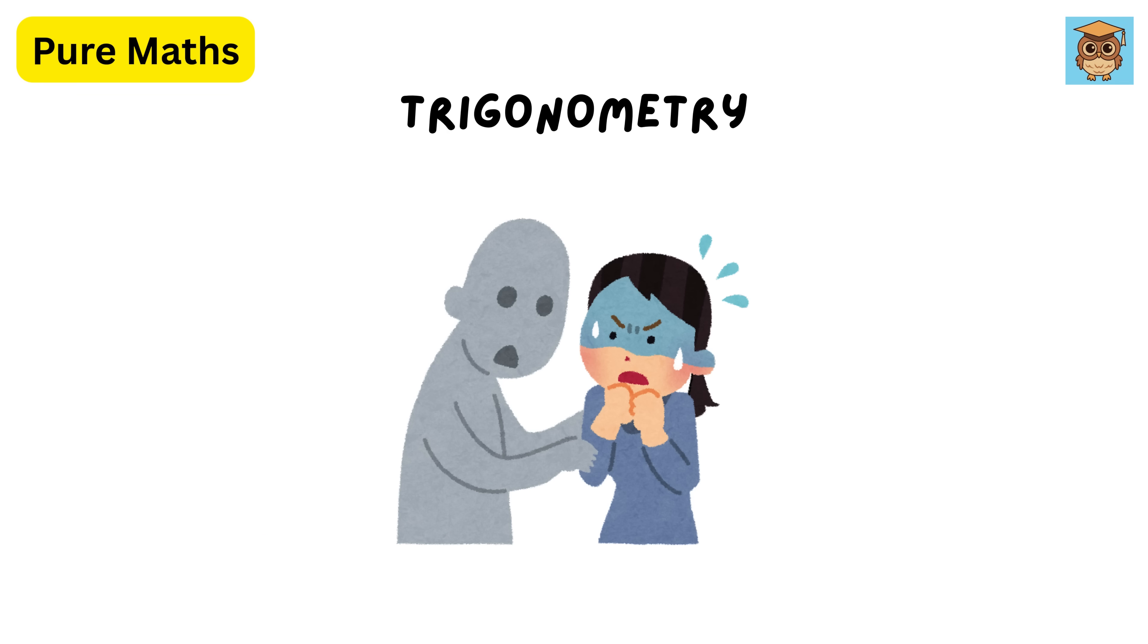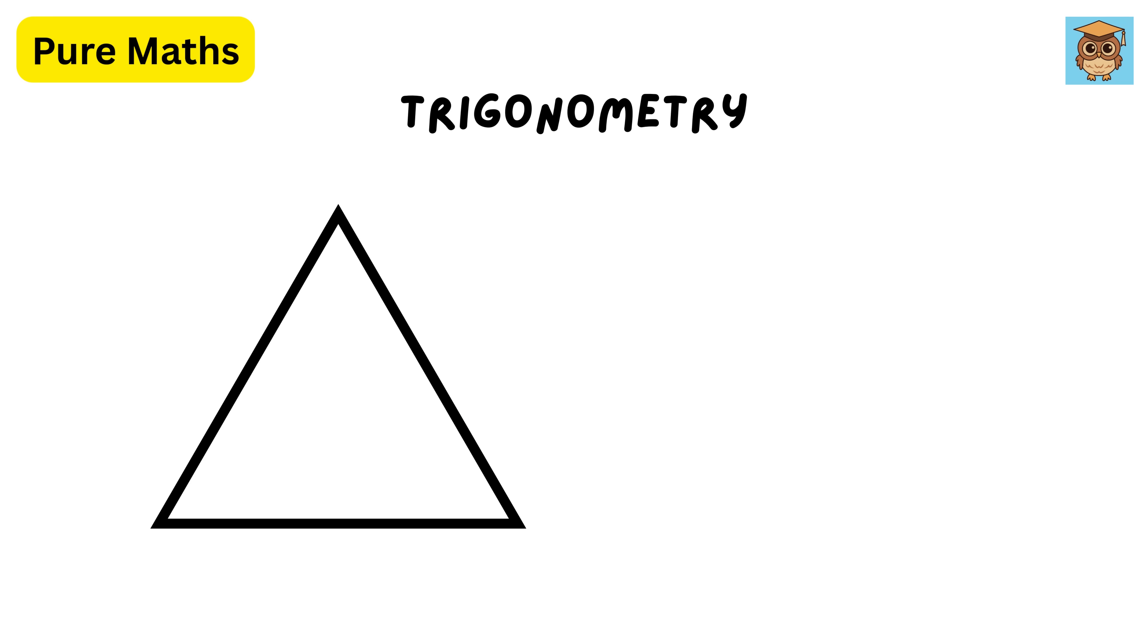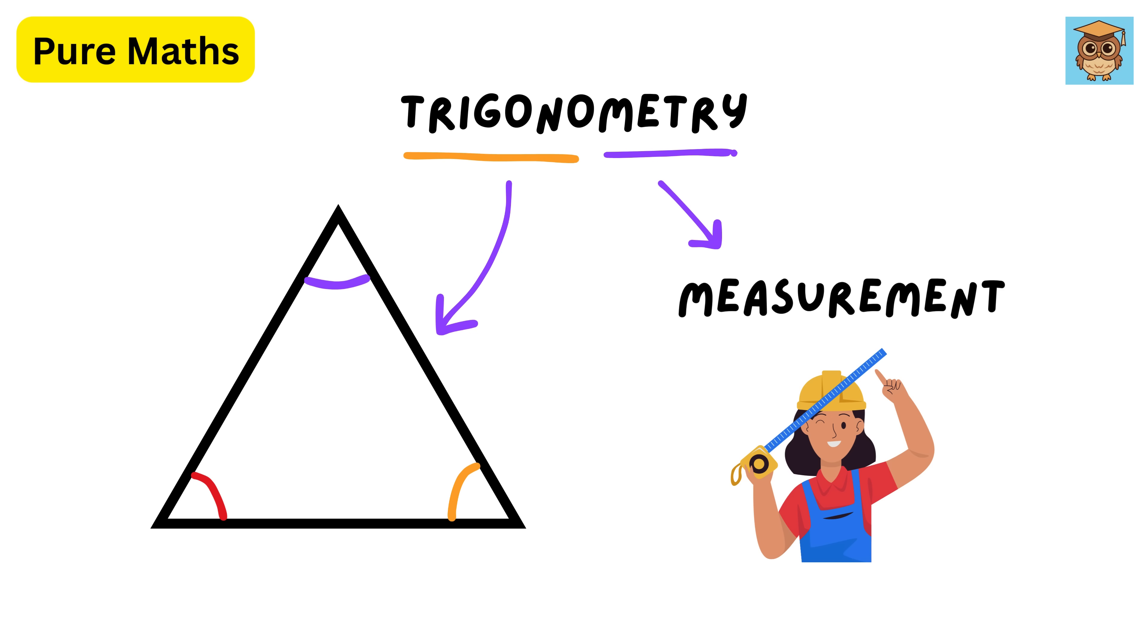Trigonometry sounds complicated, but it's really about studying triangles and their angles. Its name comes from the Greek words trigonon, which means triangle, and metron, which means measurement. So it's literally about measuring triangles.